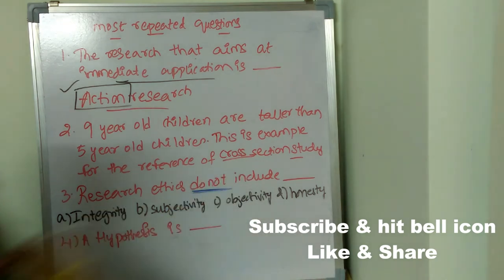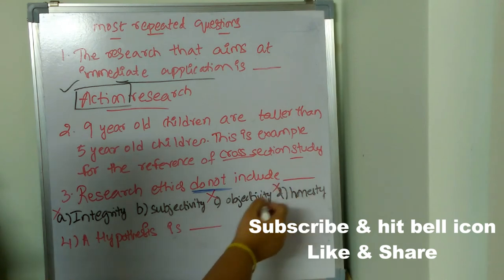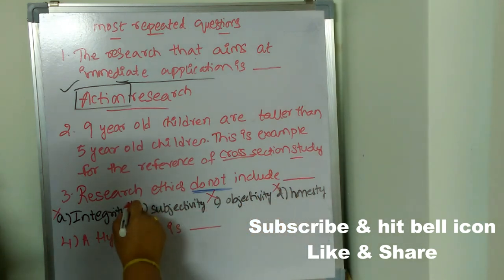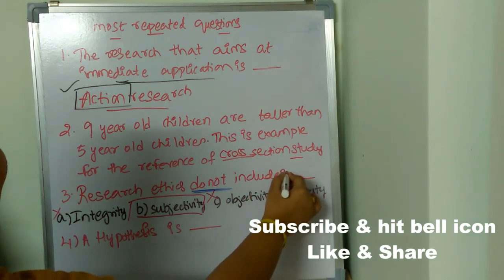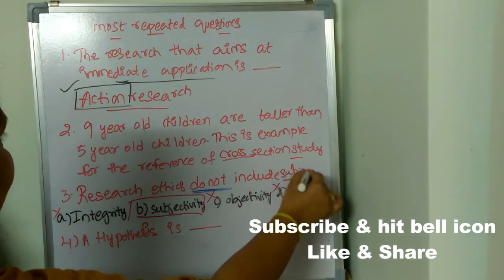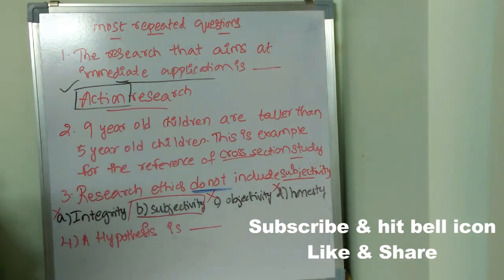So now let's see. Research ethics includes integrity, so this is not the correct answer. Objectivity and honesty, okay, but it does not include subjectivity. So the correct answer is subjectivity. Okay, next question is a hypothesis is dash.